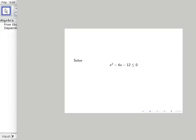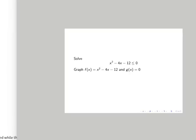So now let's consider the problem of solving x² - 4x - 12 ≤ 0. We'll begin by graphing f(x) = x² - 4x - 12 and g(x) = 0.